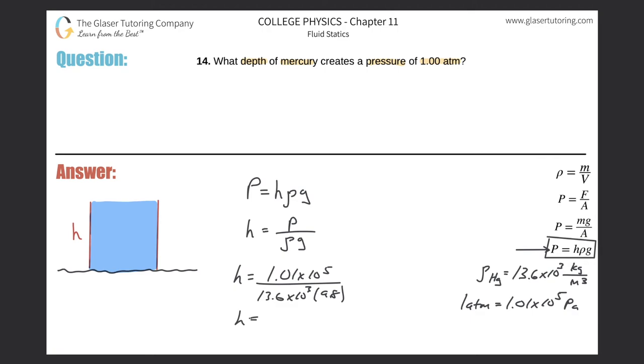All right, so let's see what we get. So 1.01 times 10 to the 5th divided by parenthesis 13.6 times 10 to the 3rd times 9.8. So we get a height value here of 0.758, and that is in terms of meters.